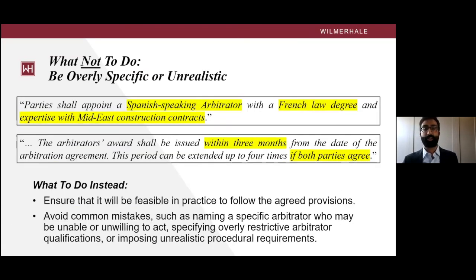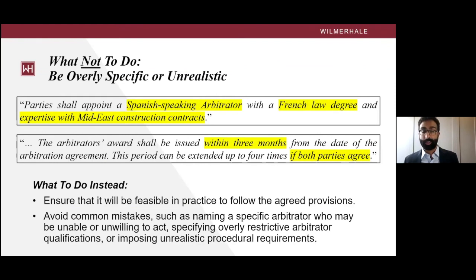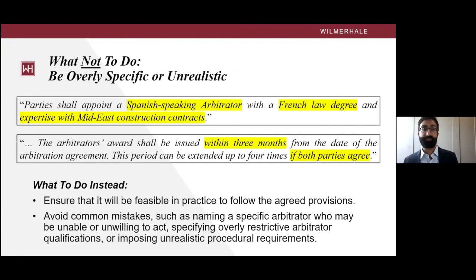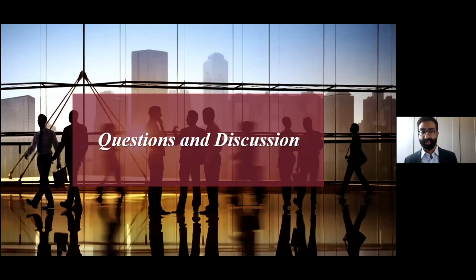The final common mistake is to include too much specificity with respect to arbitrator qualifications or the arbitral procedure. An overly specific arbitration clause can cause problems enforcing the clause in the event of a dispute. If you name a specific arbitrator in your agreement, that arbitrator may be unable or unwilling to serve when a dispute ultimately arises. You could also have problems if you specify numerous qualifications that unduly limit the pool of potential arbitrators, or if you specify requirements for arbitral procedures that may be difficult or impossible to follow in practice, which risks jeopardizing the ultimate enforceability of the arbitral award. Thanks for listening, and I look forward to discussing these issues in more detail during the Q&A and the breakout session.